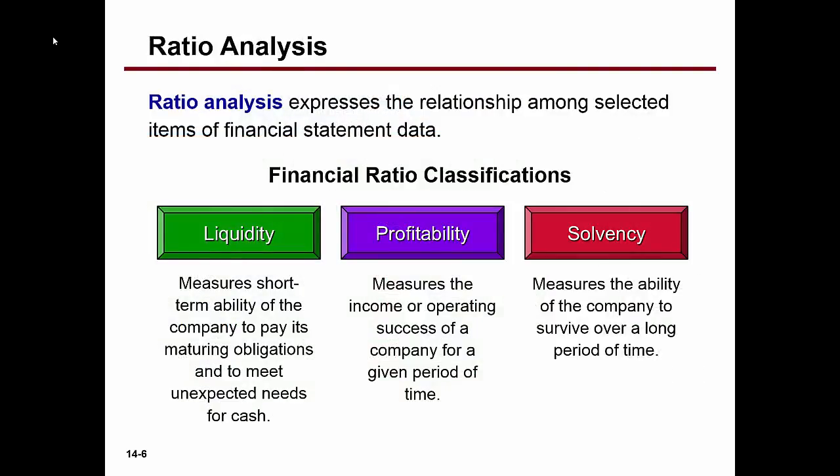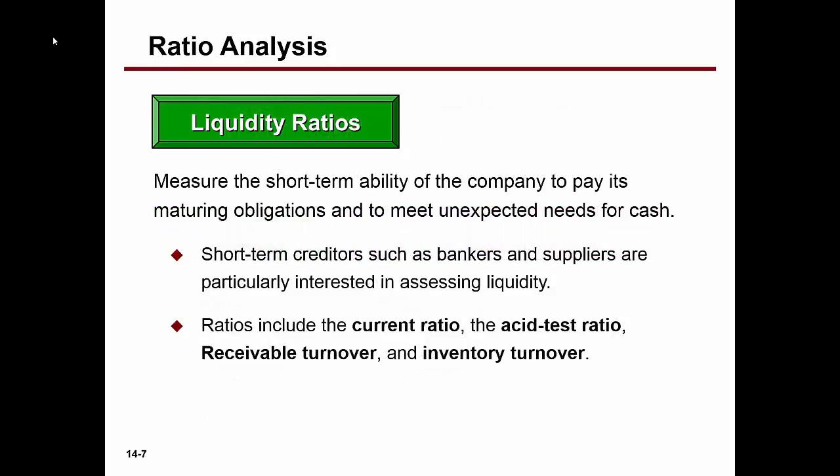Now let's look at ratio analysis. We're going to have liquidity ratios, profitability ratios, and solvency ratios. You already know the profitability ratios. Let's look at liquidity ratios — we're looking at the short-term liquidity of the company. If they had to quickly pay off liabilities, would they have sufficient resources? Because if they can't pay those off, there's a chance they could fall into bankruptcy relatively quickly.